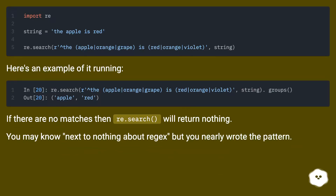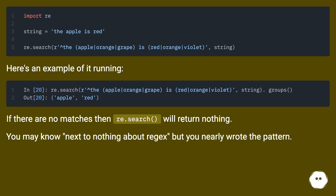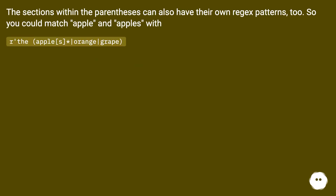Here's an example of it running. If there are no matches, re.search will return nothing. You may know next to nothing about regex, but you nearly wrote the pattern. The sections within the parentheses can also have their own regex patterns, too. So you could match 'apple' and 'apples' with 'The apple|apples* orange|grape'.